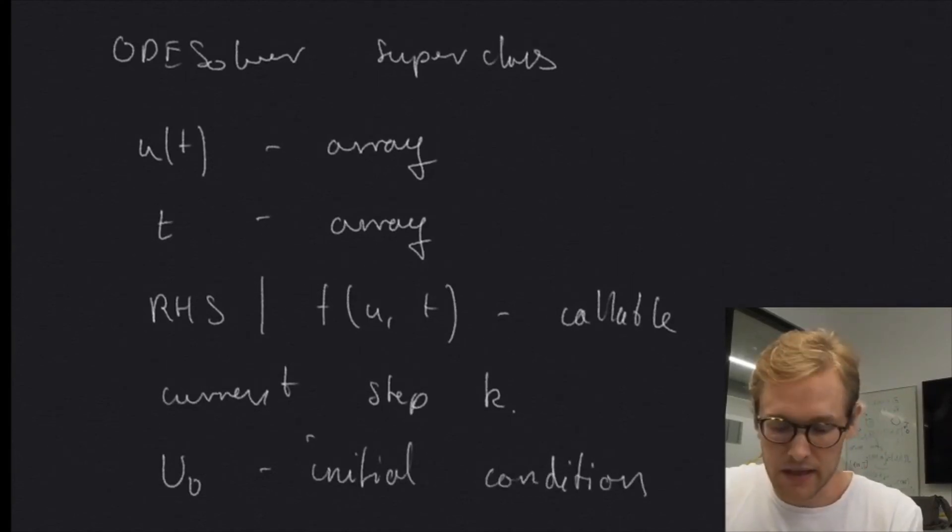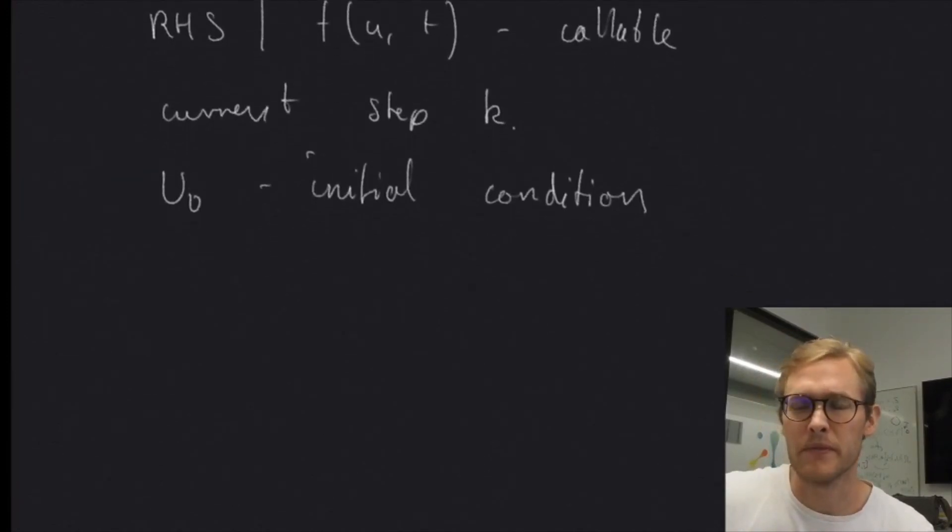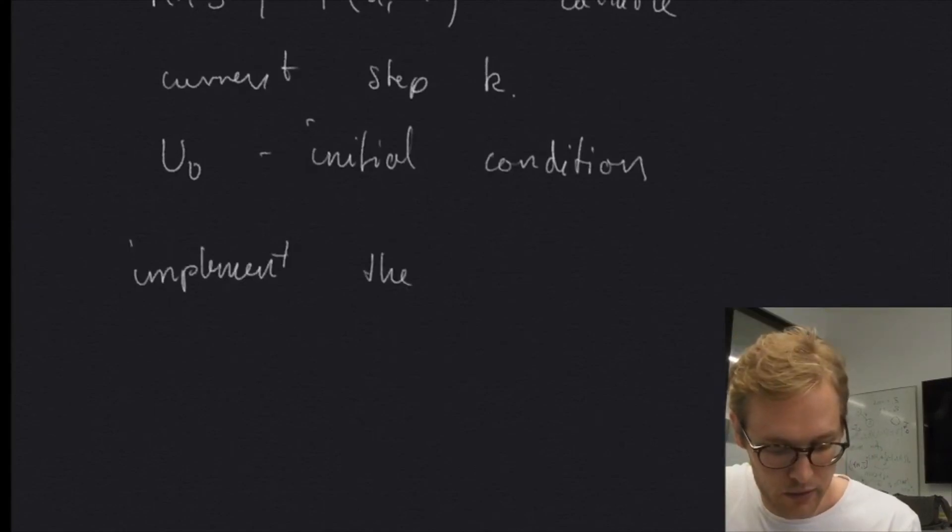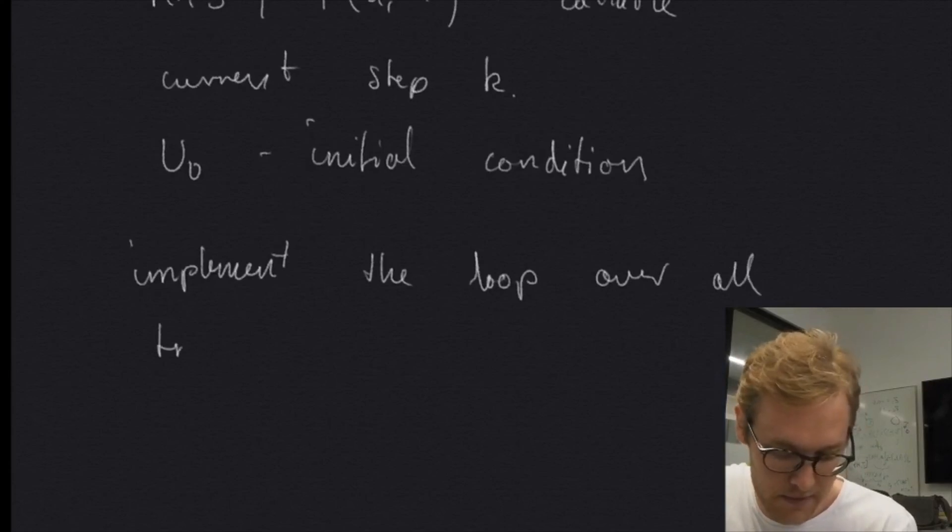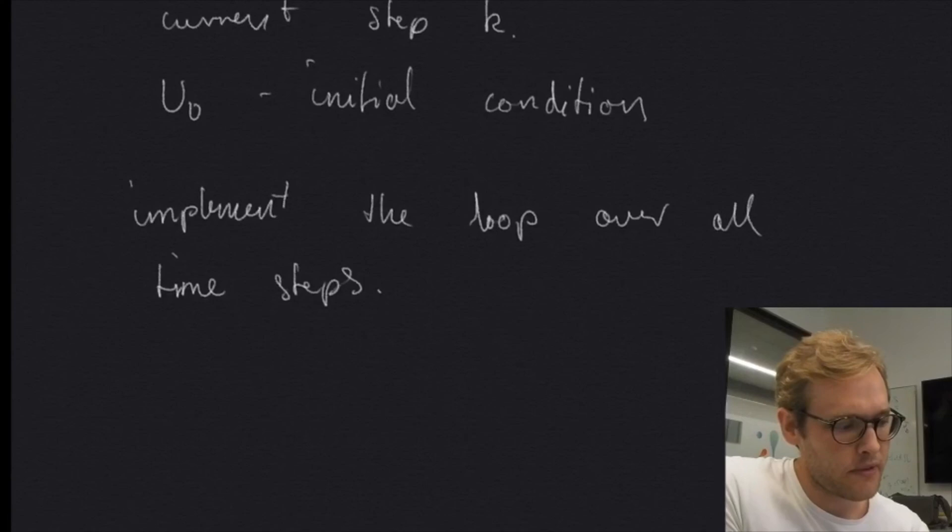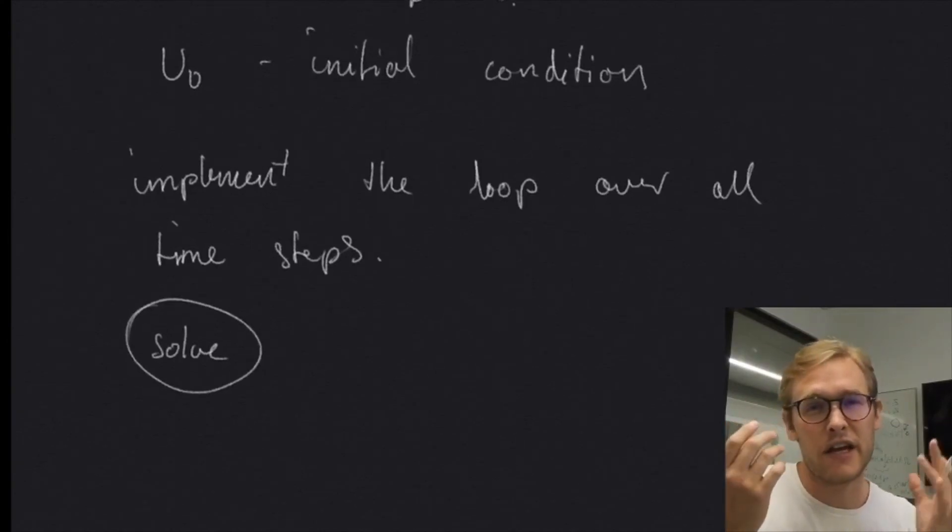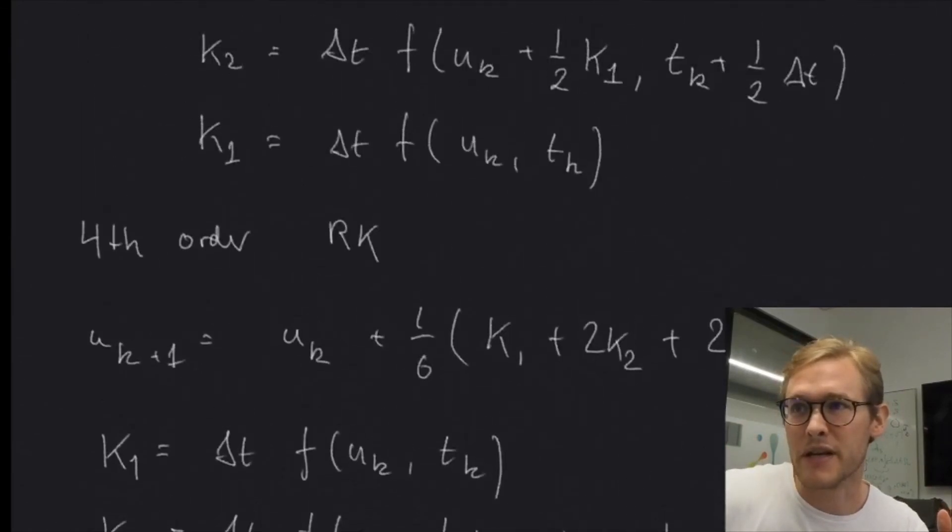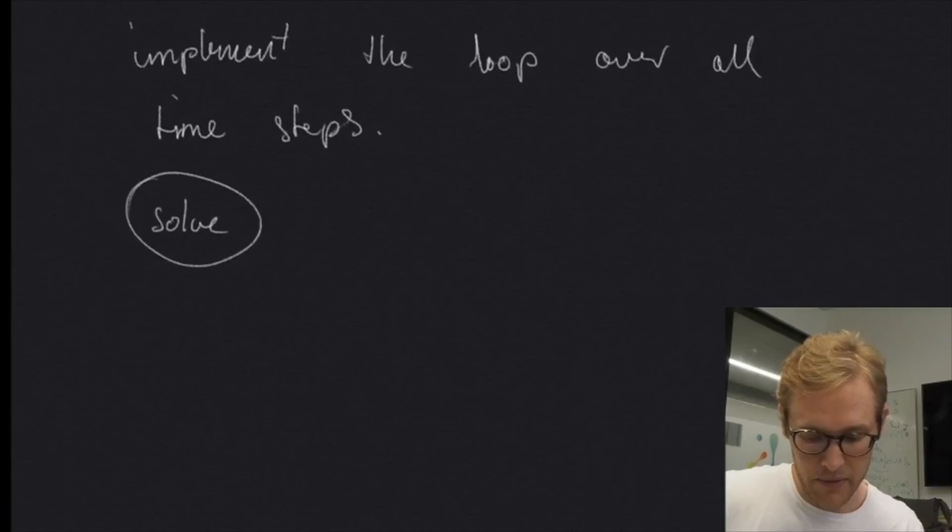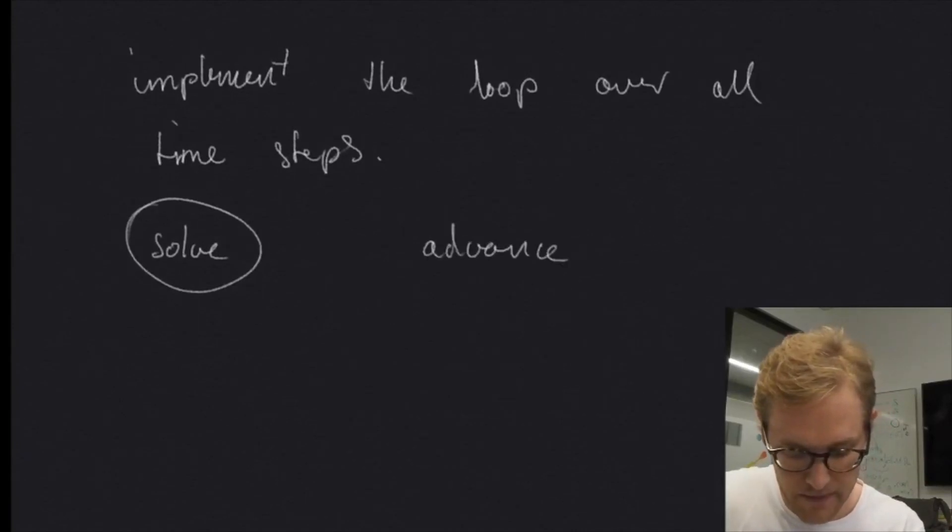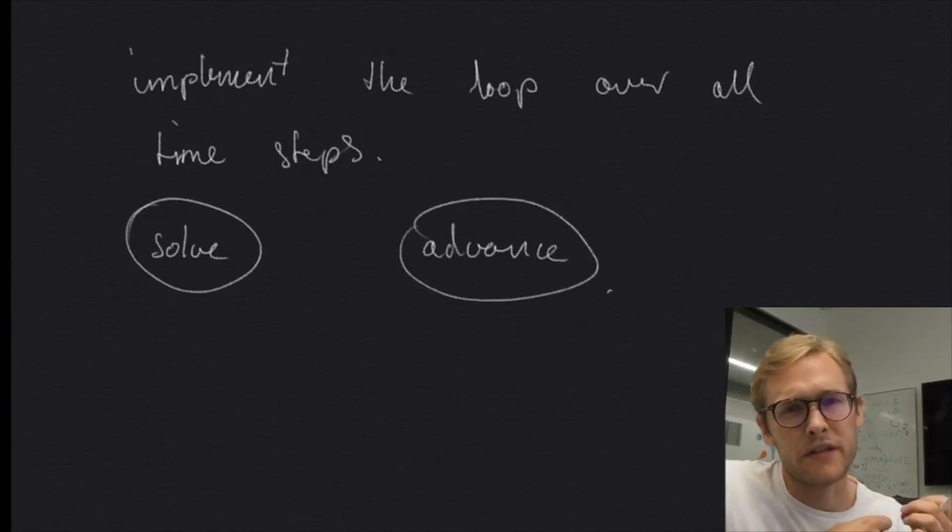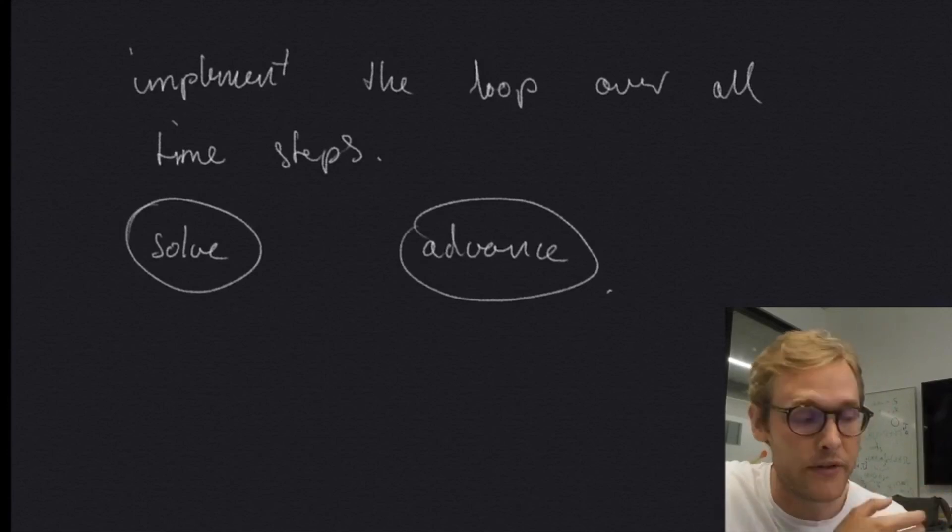And this ODE solver superclass also needs to have some methods or functions. So we need to implement the loop over all time steps. So in the superclass, what we will do, we will write a method called solve. So this will be in the superclass, but in each class, which will define each of the methods that we wrote down up here, I don't know if you'll implement all of them. We will define a method called the advance method, which will define what, or tell the computer what to do when we advance the method one time step, because that's the only real difference between all of them. So that's it for this video. In the next one, we will implement our superclass and also a few of the methods that we mentioned here. So see you there.